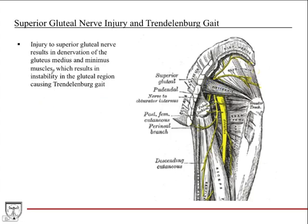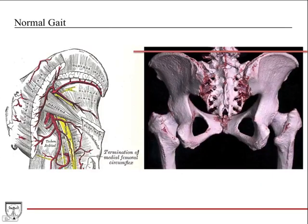Superior gluteal nerve injury results in de-innervation of the gluteus medius and minimus muscles. This causes instability in the gluteal region because these two muscles are responsible for stabilizing the hips during normal gait, and their loss leads to a condition called Trendelenburg gait.